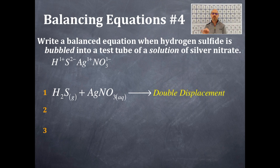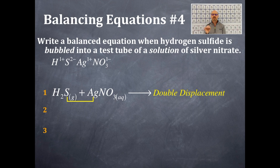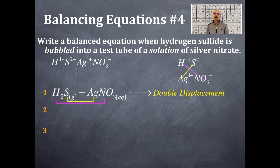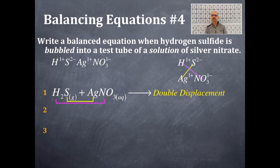I'm going to get the products of a double displacement reaction. I'm going to switch and combine the hydrogen with a new anion and the sulfide with a new cation — the sulfide with silver, and the hydrogen with the nitrate. Another way of looking at this is crisscross applesauce. So one product is hydrogen and nitrate: hydrogen is one plus, nitrate is one minus. I take the absolute value, flip, bring them down, and I get HNO₃.